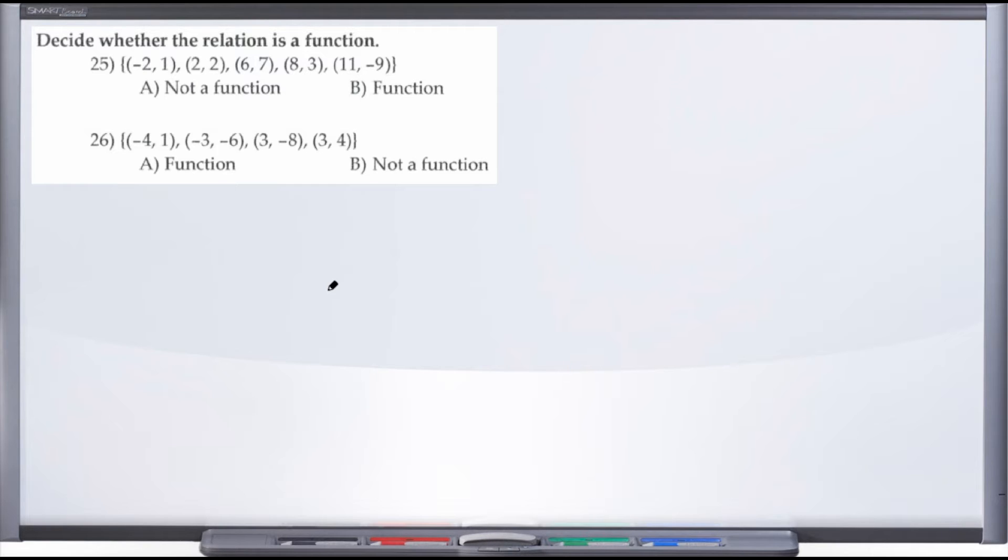All we're really looking to see is whether or not that x-value repeats in the set of ordered pairs, because for every x there can only be one y, which means the x can't repeat. So let's go ahead and take a look here at number 25 and see if the x-coordinate for any of these ordered pairs repeats.